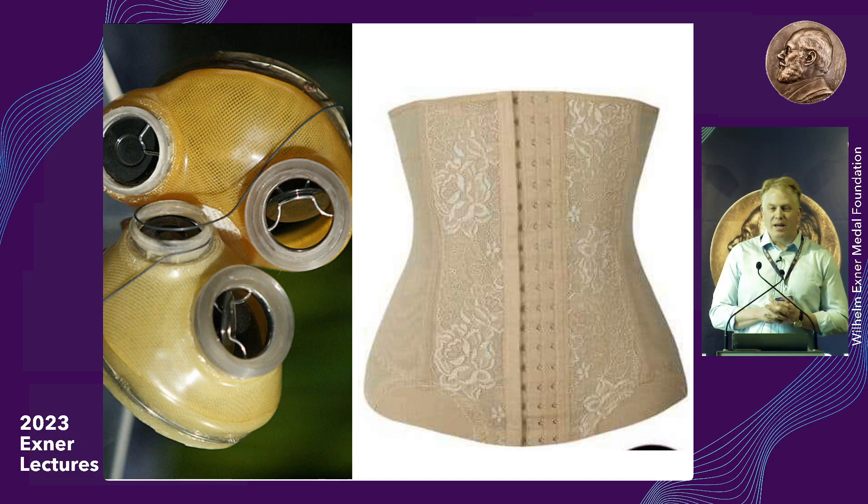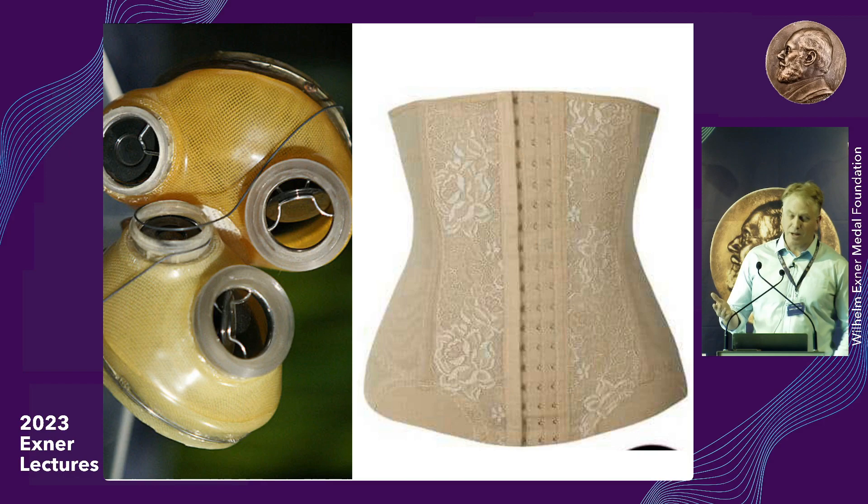The first artificial heart — the scientists knew they needed something with a good flex life. They thought of a lady's girdle, and so the first artificial heart was made of polyester urethane, which gives that lady's girdle its nice flexibility. This led to many important advances, but it became clear that these off-the-shelf materials could be inadequate for medical applications.